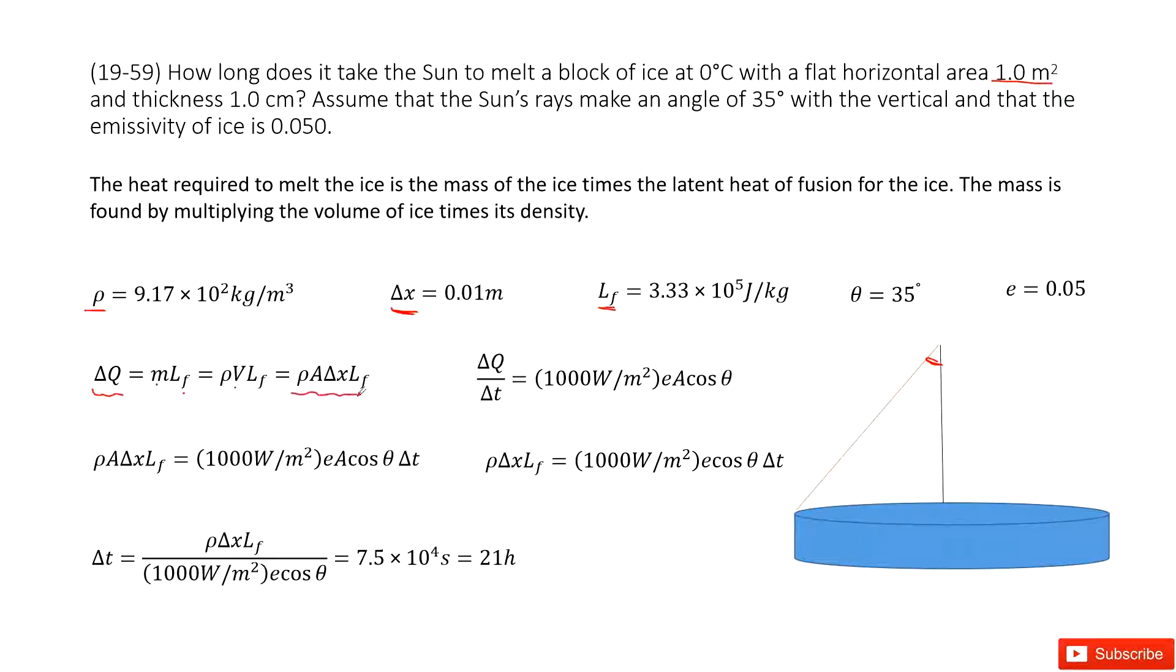In this way we find the energy required. Now for the energy received, we have energy received over time taken, which becomes the power. This equals the power of the sun for 1 meter squared, which is 10000 W per meter squared, times the emissivity constant, times the surface area of this ice.